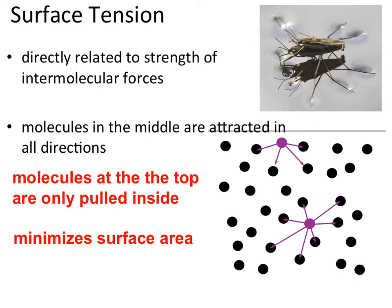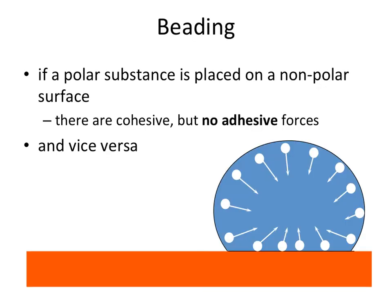The stronger intermolecular forces at the surface allow more force to be applied — such as by the legs of a water-walking bug. If you supply enough force onto the surface, you will break the surface tension and sink to the bottom. As intermolecular forces increase, surface tension also increases, resulting in a minimization of the surface area and a stronger surface that light objects like bugs or leaves can pass over.